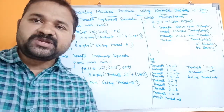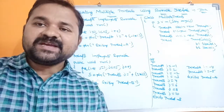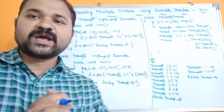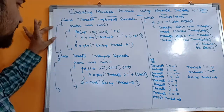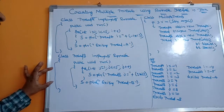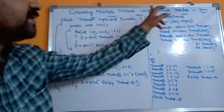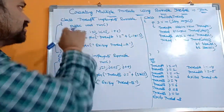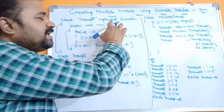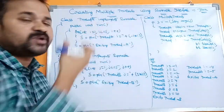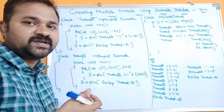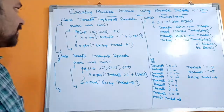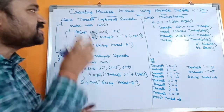In this video we are going to discuss about creating multiple threads using the Runnable interface in Java. Here we have two threads which are created by implementing the Runnable interface. Let's see the first thread: class ThreadA implements Runnable. Runnable is an interface, and every class implements an interface.